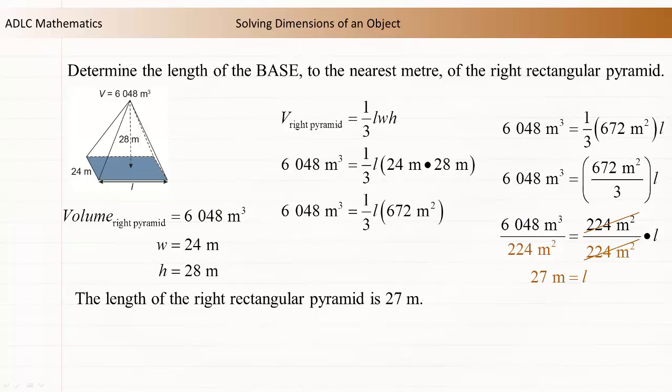The length of the base of the right rectangular pyramid is 27 meters.